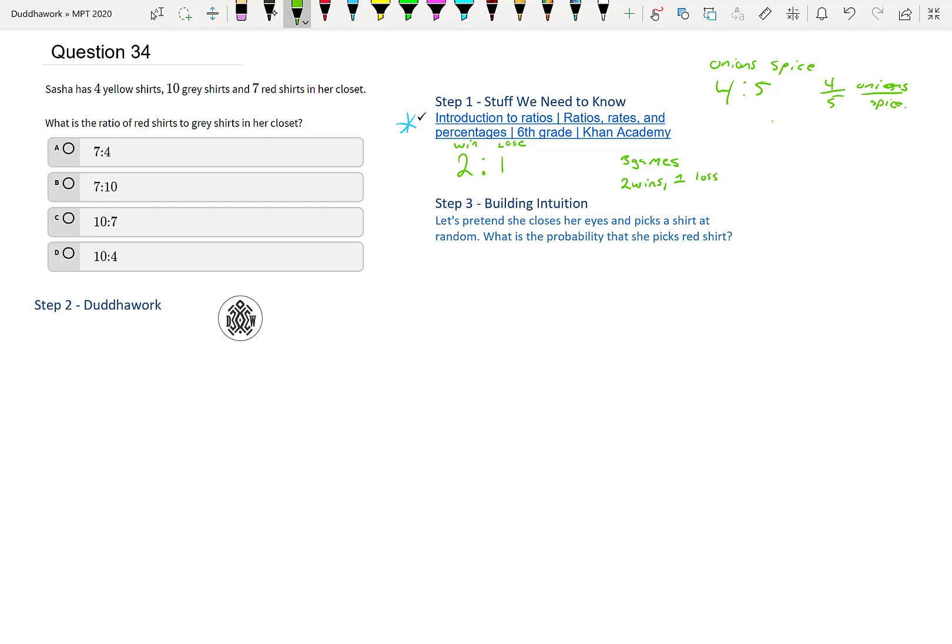So there's different ways to look at ratios, but essentially, that's what you need to know here. And so this question is pretty obvious once you know the theory. So what is the ratio of red shirts to gray shirts in her closet? Well, you have seven reds. So it's red.